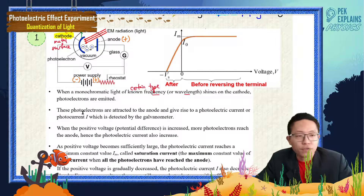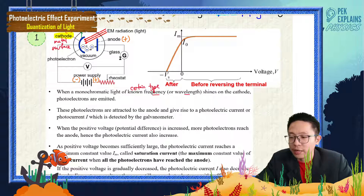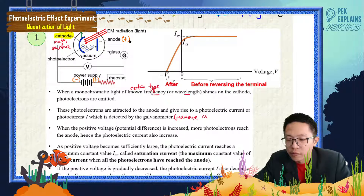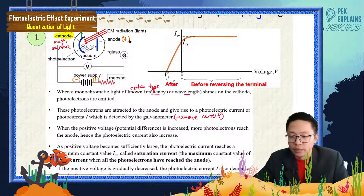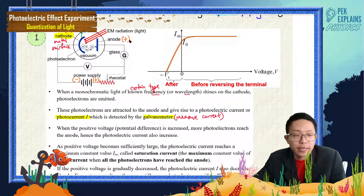These photoelectrons are attracted to the anode and give rise to photoelectric current, or photocurrent, which is detected by the galvanometer. The galvanometer measures current.